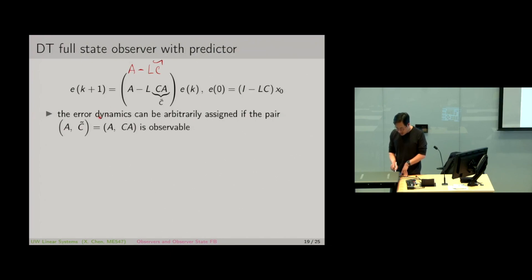The eigenvalues of this matrix can be made arbitrary in the complex plane if A and C tilde define an observable pair. In other words, if A and CA define a rank N observability matrix.